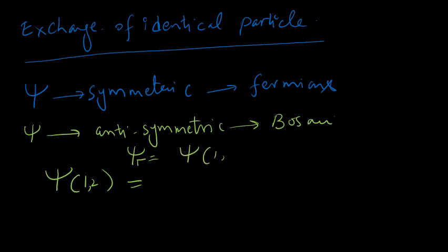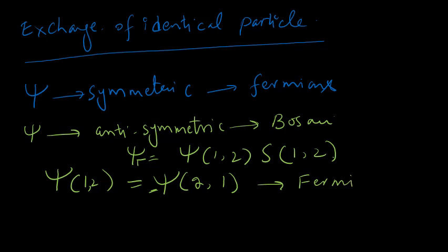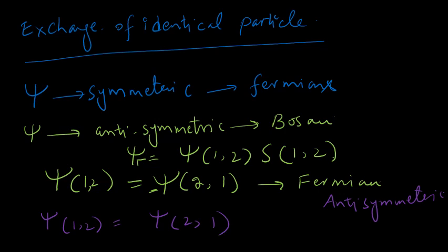For fermions, the total wave function changes sign when we exchange the particles: Ψ(1,2) = −Ψ(2,1). Such a function is called an antisymmetric wave function. For bosons, Ψ(1,2) = Ψ(2,1) — under the exchange of either spin or spatial coordinates, the total wave function does not change sign, and such a wave function is called symmetric.